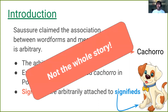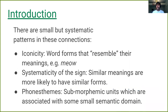But this is not the whole story. Over the years, a lot of researchers have talked about things like iconicity, when word forms resemble the meanings they refer to. For example, words like meow will sound like the sound that the cat makes. Systematicity of the sign talks about how similar meanings are more likely to have similar forms, and this is a statistical property of language — not deterministic, but statistically speaking, more similar meanings will have more similar forms.